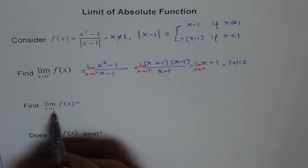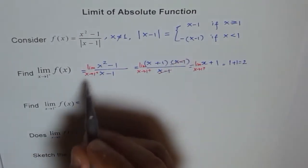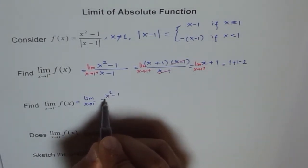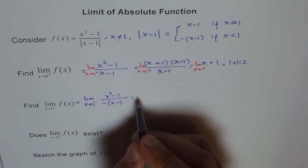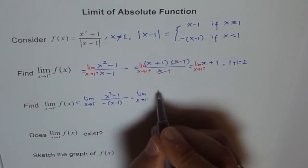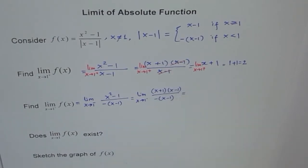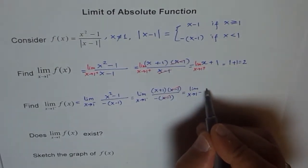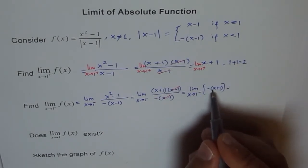When x is approaching 1 from the negative side, that means x is less than 1. So we use -(x - 1) in place of |x - 1|. The function becomes: limit as x→1⁻ of (x² - 1) / (-(x - 1)). Factoring the numerator gives (x + 1)(x - 1) over -(x - 1). The (x - 1) terms cancel, leaving -(x + 1). Plugging in x = 1 gives -2. So the left-hand limit is -2.